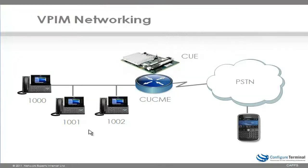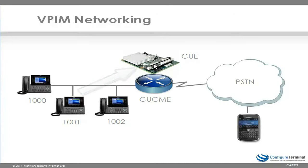So we were able to send a voicemail from 1001 to 1000 by dialing into Unity Express and using option 2. Rather than 1001 phoning 1000 directly, 1001 pressed the messages button, dialed into Unity Express, pressed 2 to send a voicemail, recorded it, and the voicemail was accepted. A message waiting indication was set on 1000, which then dialed in and retrieved the voicemail.